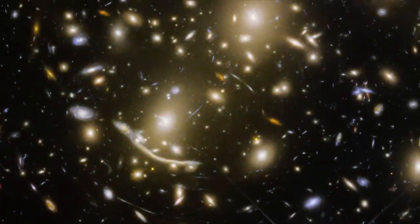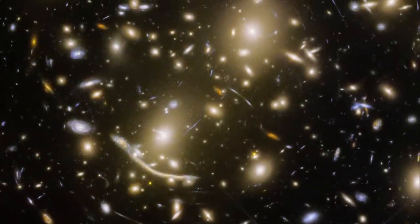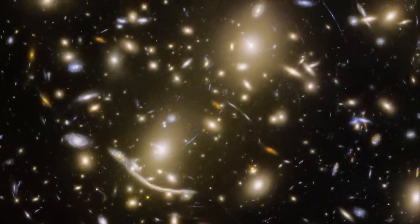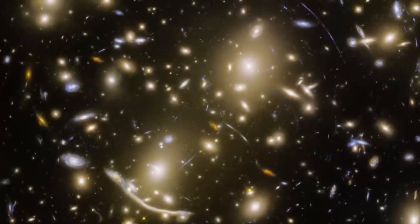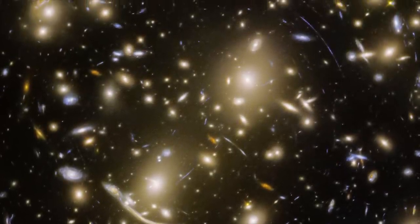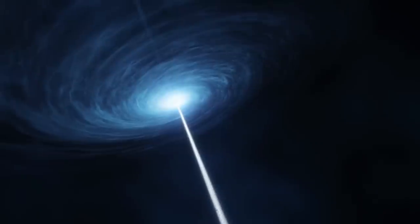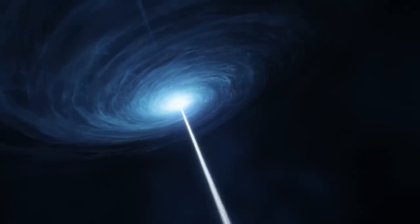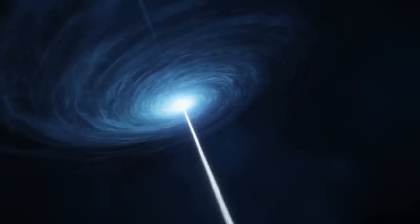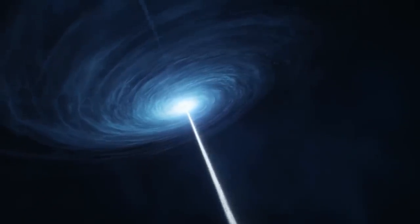How did the radiation of the first stars escape the dusty environment of their parent galaxies to ionize the matter in between galaxies? Were the first stars really powerful enough to re-ionize the universe, or did active black holes play a role as well?